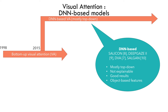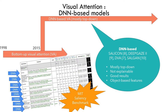From around 2015, there is a new branch in the tree of visual attention based on DNNs. These models really focus on top-down information, while earlier models focused on bottom-up. They are not easy to explain because you have a DNN and it's not easy to see what happens inside. However, the results are quite good because most datasets like the MIT saliency benchmark have images where most of the information is top-down. You can see on this benchmark that the first models are all DNN-based.